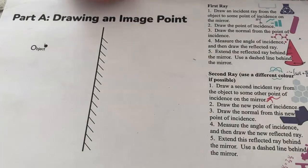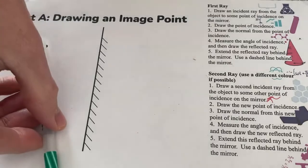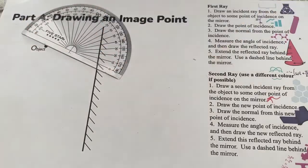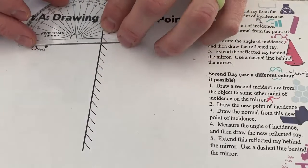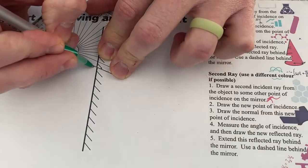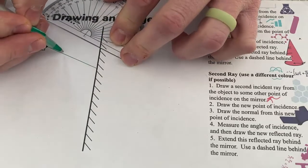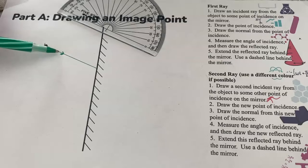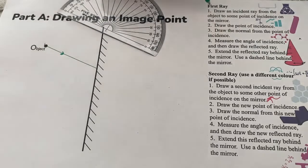We're going to follow through the steps for each of the rays. Step one: we're going to draw an incident ray from the object to some point of incidence on the mirror. Remember, in order for a ray to be useful to find an image, it actually has to reflect off the mirror. So we're going to choose any direction — it really doesn't matter as long as it hits the mirror at some point. We draw a line from our object to the mirror and put an arrow on it to indicate what direction light is traveling.